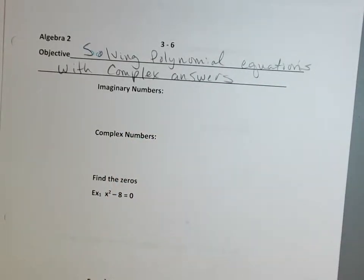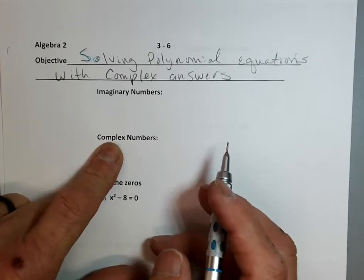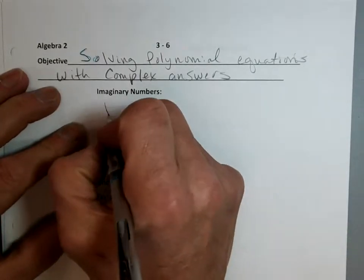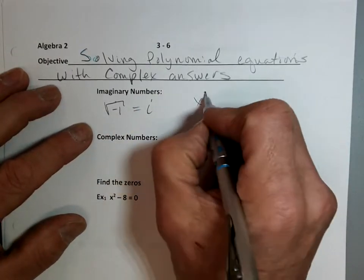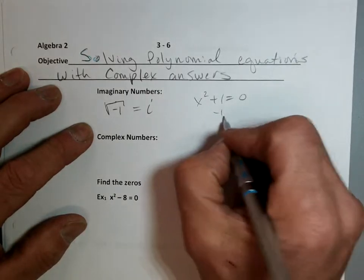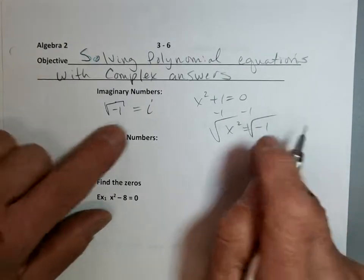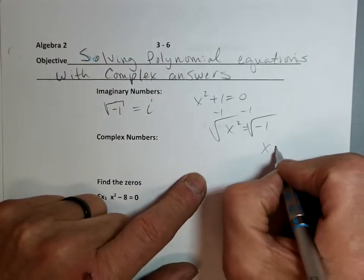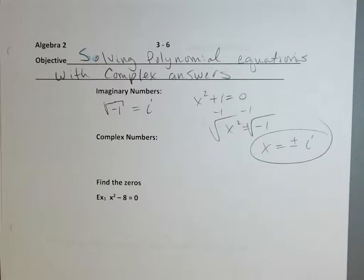Complex numbers have a real part with an imaginary part. An imaginary number is just an i. The square root of negative 1 equals i, and they come in pairs. So if I had x squared plus 1 equals 0 and solved for x, I'd subtract 1, get x squared equals negative 1, take the square root, and get x equals plus or minus i. They always come in pairs.